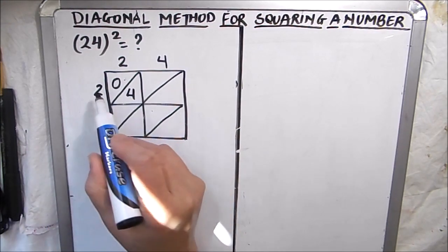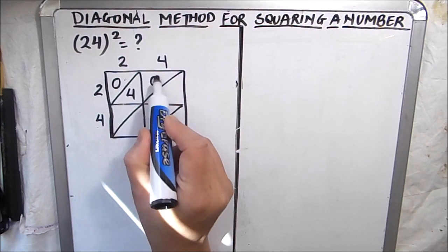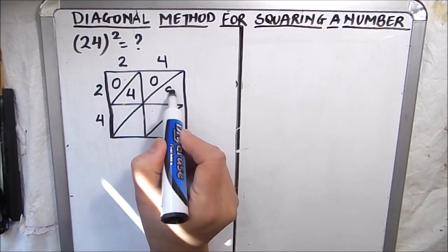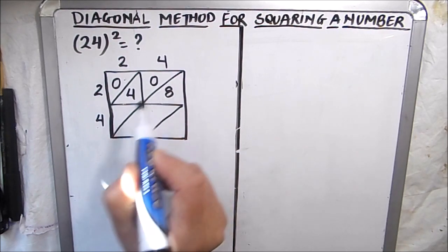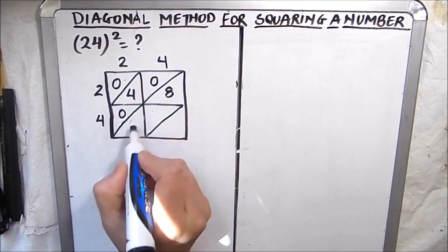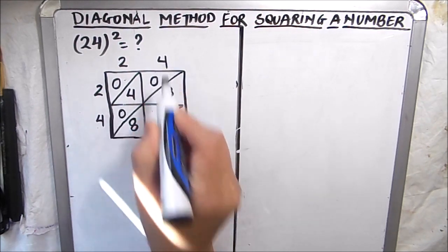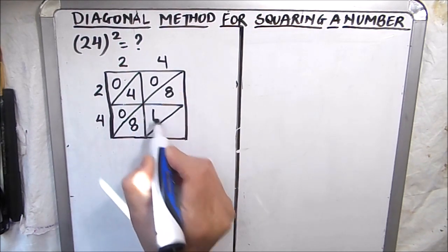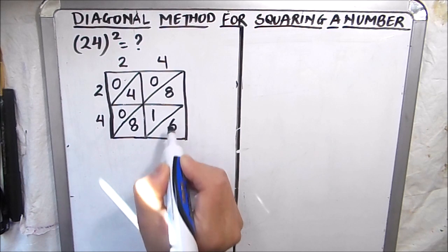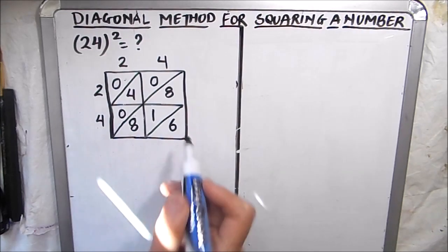Four times two is eight, so we write 08. And four times four is sixteen, so we write 16. Now we are going to start adding the diagonals.